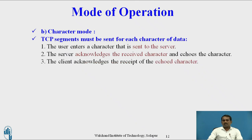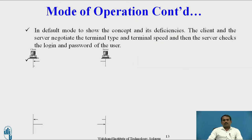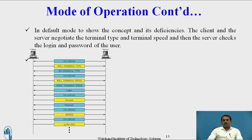Character mode: a TCP segment must be sent for each character of data. There are three steps: first, the user enters a character that is sent to the server; second, the server acknowledges and echoes the character; third, the client acknowledges receipt of the echoed character. In this mode, the client and server negotiate the terminal type and terminal speed, and the server checks the user's login and password.